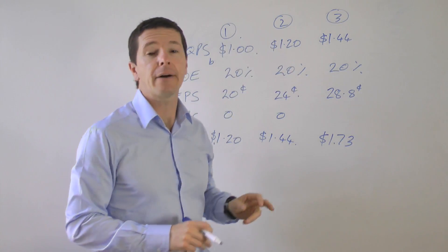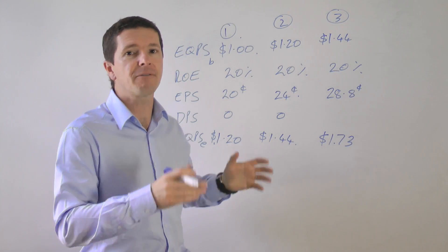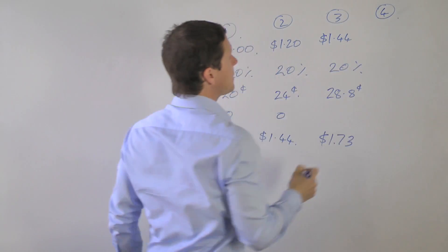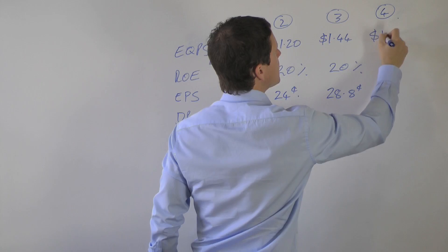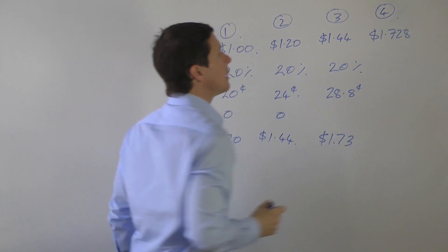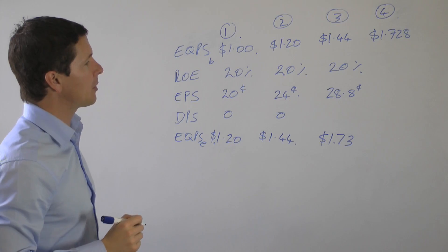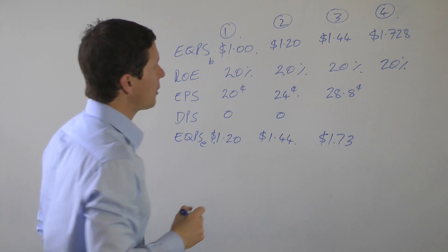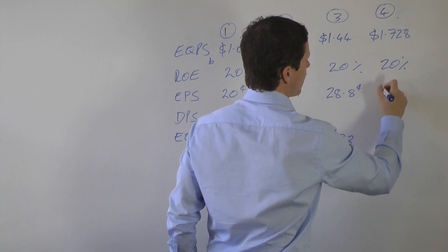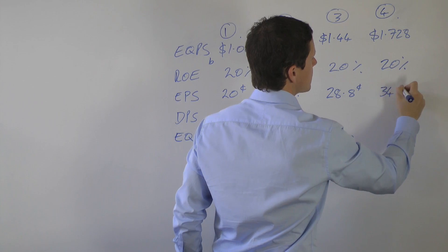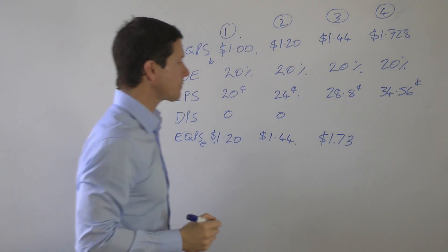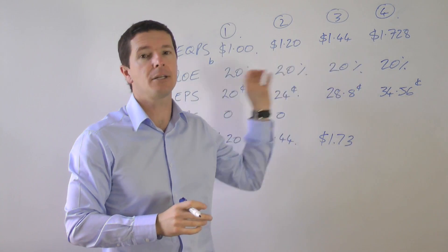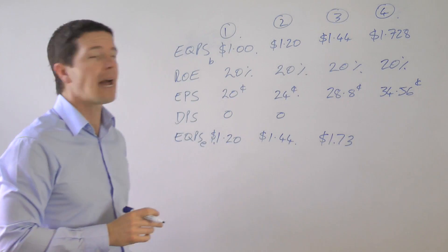In the fourth year—and it really doesn't matter whether the final year is the fourth, fifth, tenth, or twentieth year—the company begins the year with $1.73 of equity per share on which it earns 20 percent. This is equivalent to 34.5 cents per share. Let's stop there for a minute because we can assume that this continues for five years or 10 years or however long you like.